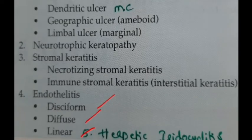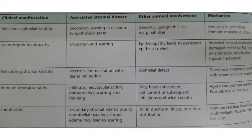I found a few tables which are very useful to all of you, so I thought of sharing them here. This table shows what the associated stromal diseases are in each type — apart from the epithelial manifestation, what will be there in the stroma and other corneal involvement, and the mechanism by which it is caused, which I discussed in the previous video. This is just in tabulated form.